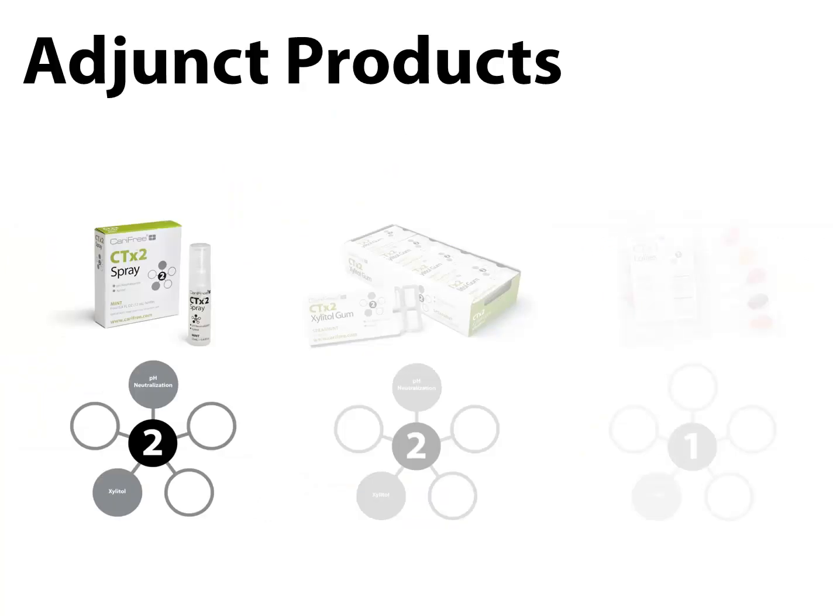In addition to the treatment line of products, there are also a few adjunct products. Each is named and given a score based on the number of components they contain. The first adjunct product is the CTX-2 spray. It contains xylitol and has an elevated pH of 9. The spray can be added to your treatment regimen or used as a standalone product. It is also helpful for patients experiencing dry mouth symptoms or those that frequently snack or drink acidic beverages.